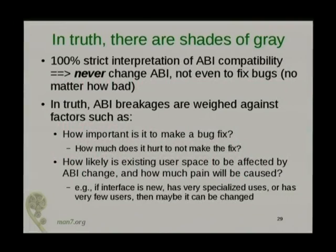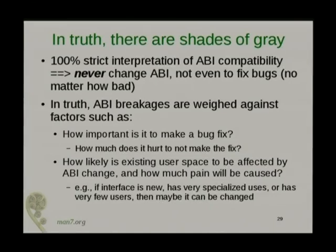If you had a very strict interpretation of ABI compatibility, you'd never change anything — you wouldn't even fix bugs no matter how bad they are. In truth, it's a bit of a grey area. ABI breakages are measured against: how bad is it not to change things? If it's a bad bug, how painful is the bug versus how painful is it to break some existing applications? Or there may be very few users for the API, in which case if we change it, maybe no one's going to get hurt.